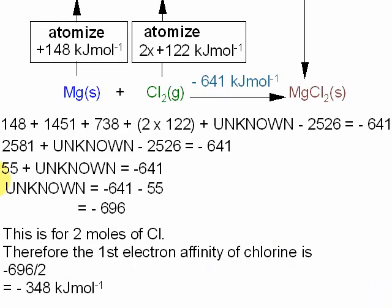Continuing the math, I've added up these values to give 2581, and the other two values remain the same. Then I've added those two values to give you 55 plus unknown equals -641.